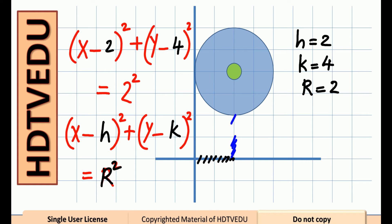1, 2, 3, 4. So, this is the center. And our circle has a radius of 2 units.